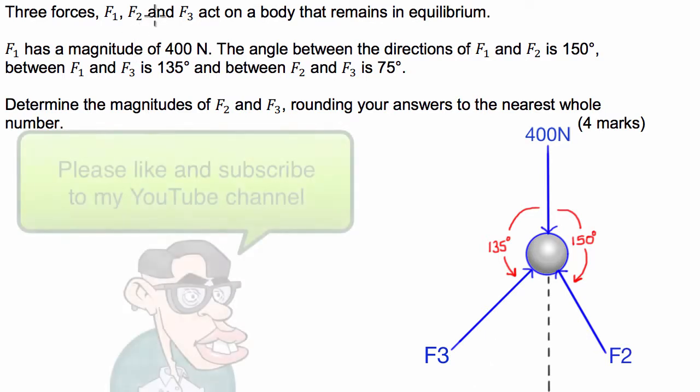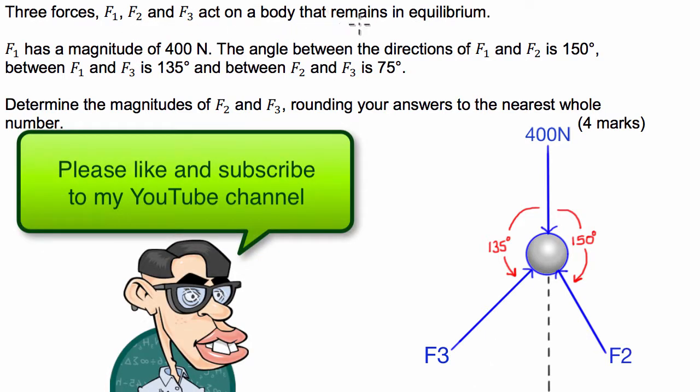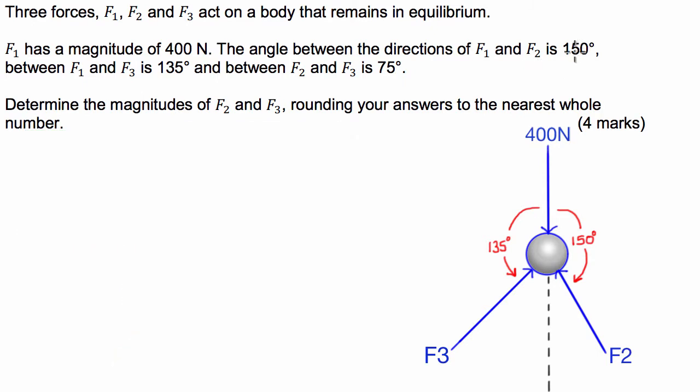Now we've got three forces, F1, F2 and F3, act on a body that remains in equilibrium. F1 has a magnitude of 400 newtons, the angle between the directions of F1 and F2 is 150 degrees, between F1 and F3 is 135 degrees, and between F2 and F3 is 75 degrees. Determine the magnitudes of F2 and F3, rounding your answers to the nearest whole number.